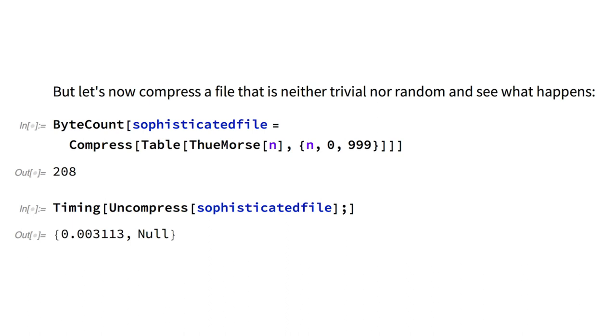But let's now compress a file that is neither trivial nor random and see what happens. We can see that, just as we would have expected, the TwoMorse sequence that is algorithmically generated and produces some non-trivial statistical patterns can be compressed by more bits than the pseudo-random sequence, but by less than the trivial file.